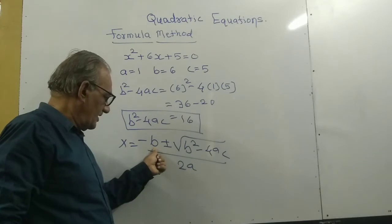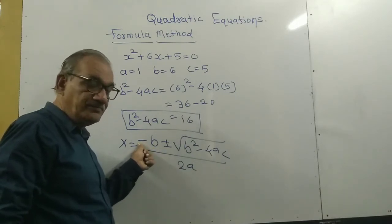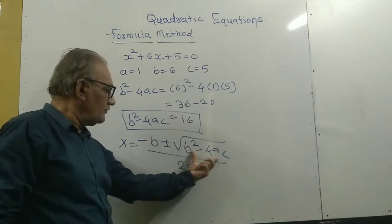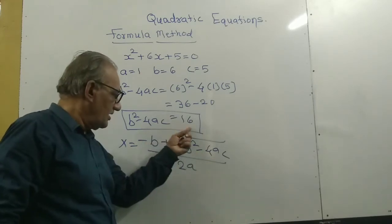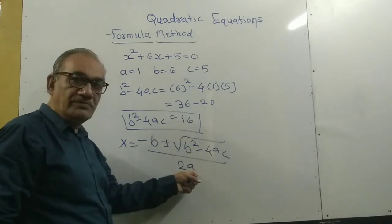The discriminant value b² - 4ac is 16. We'll put this value in the formula.